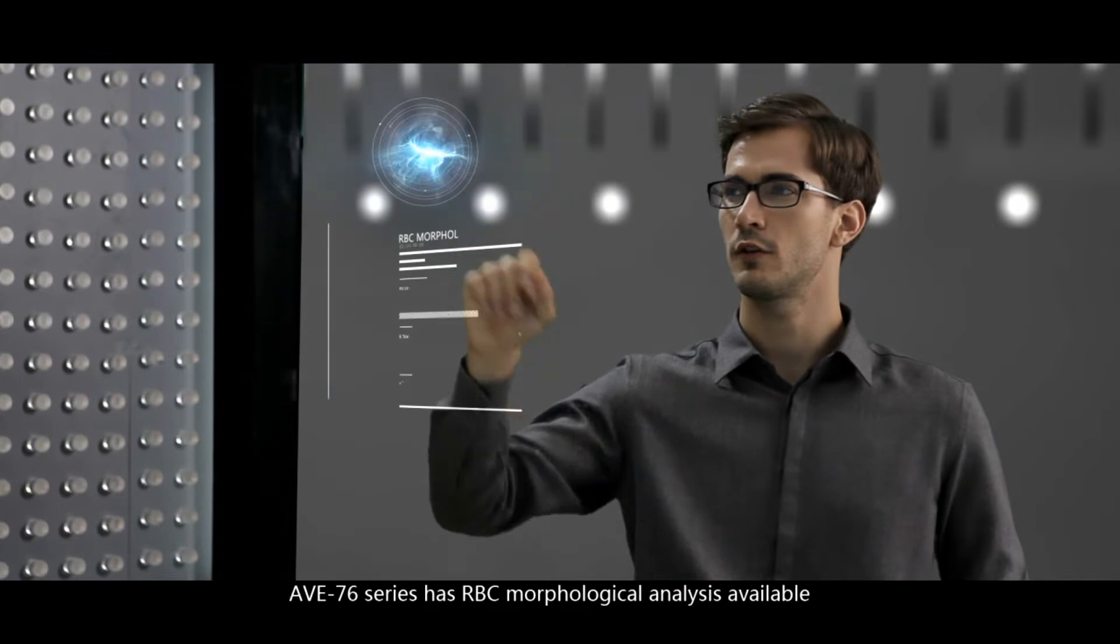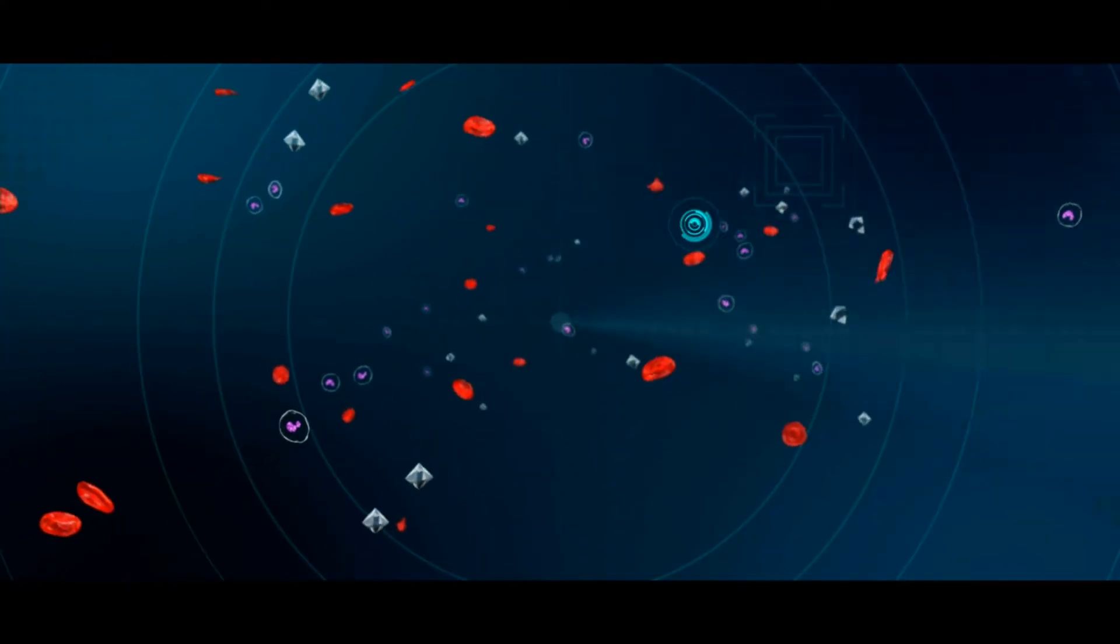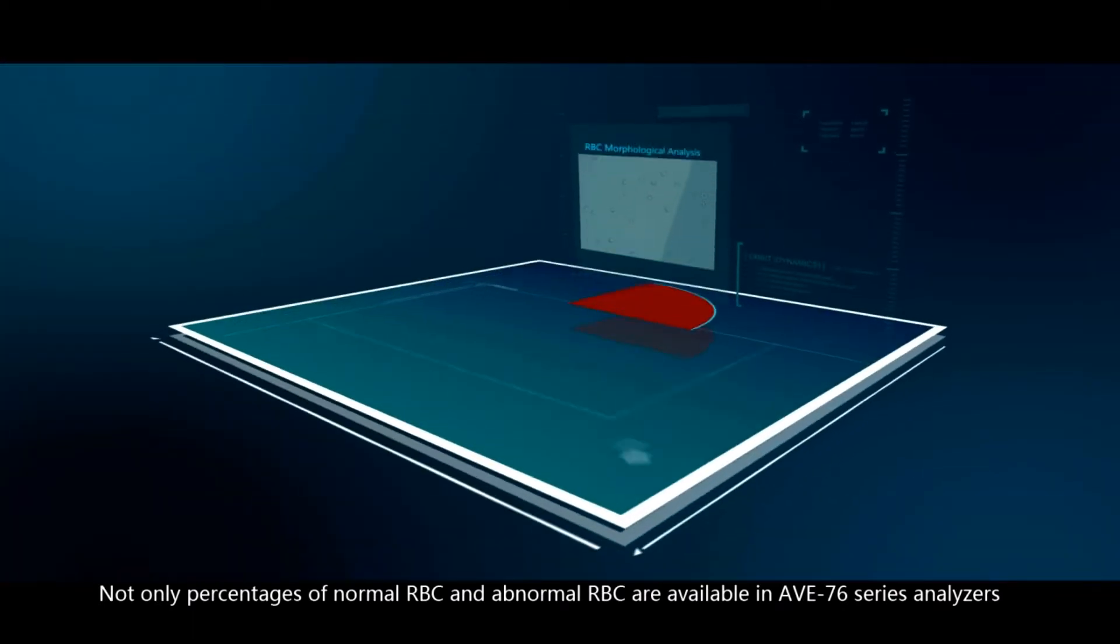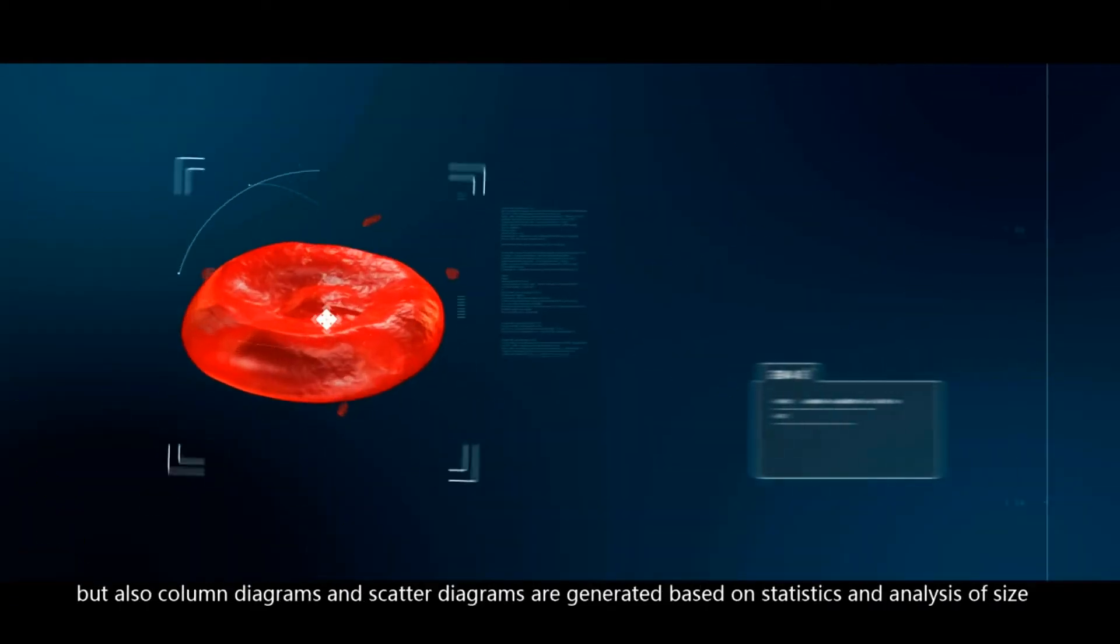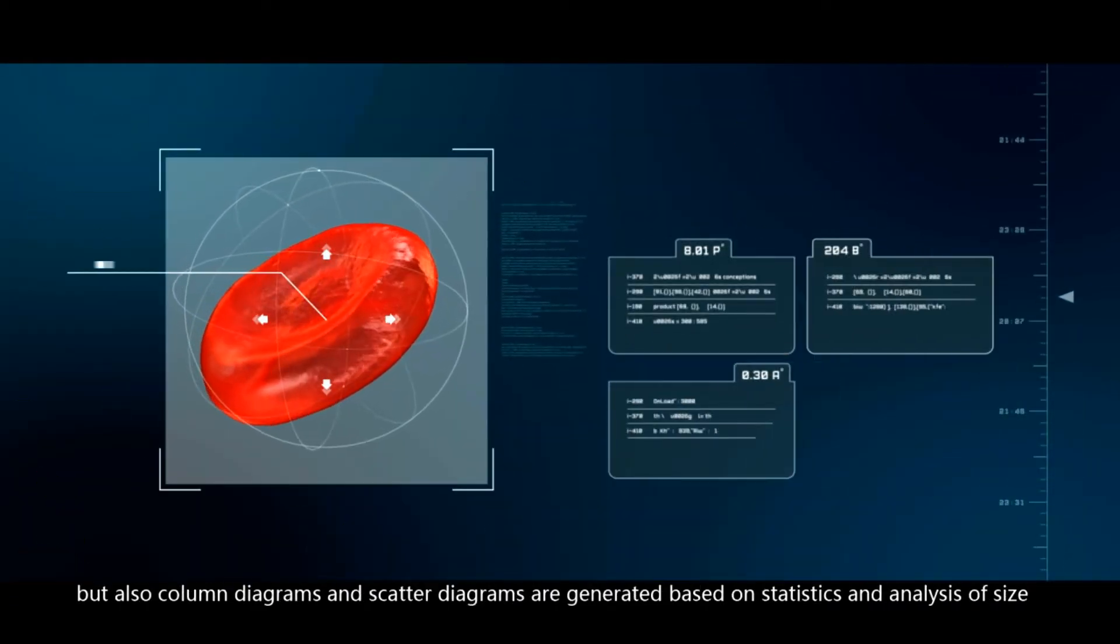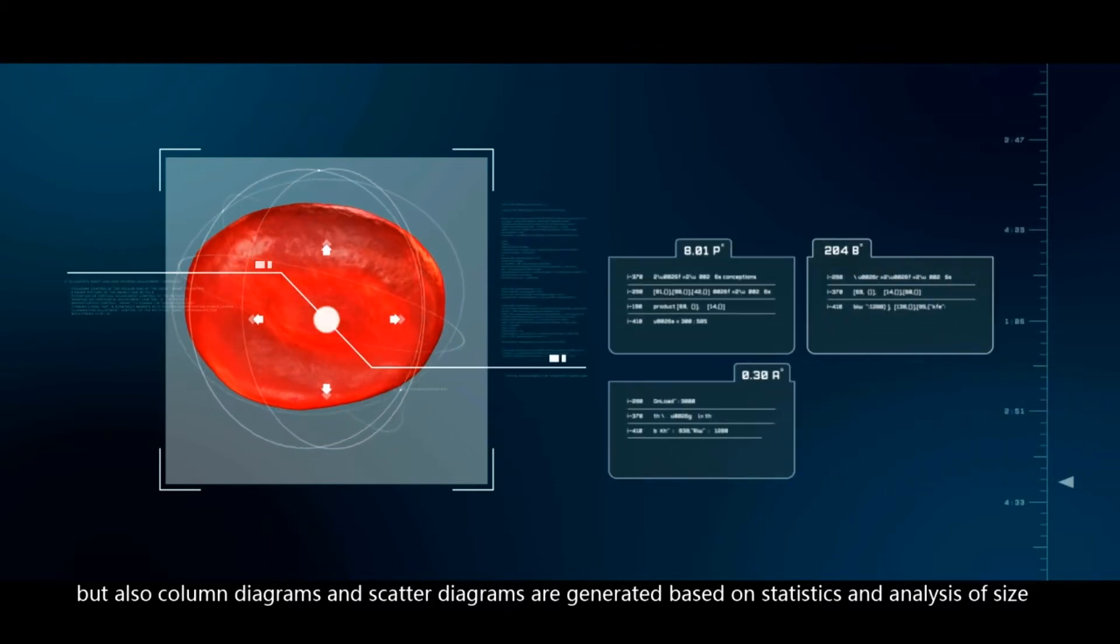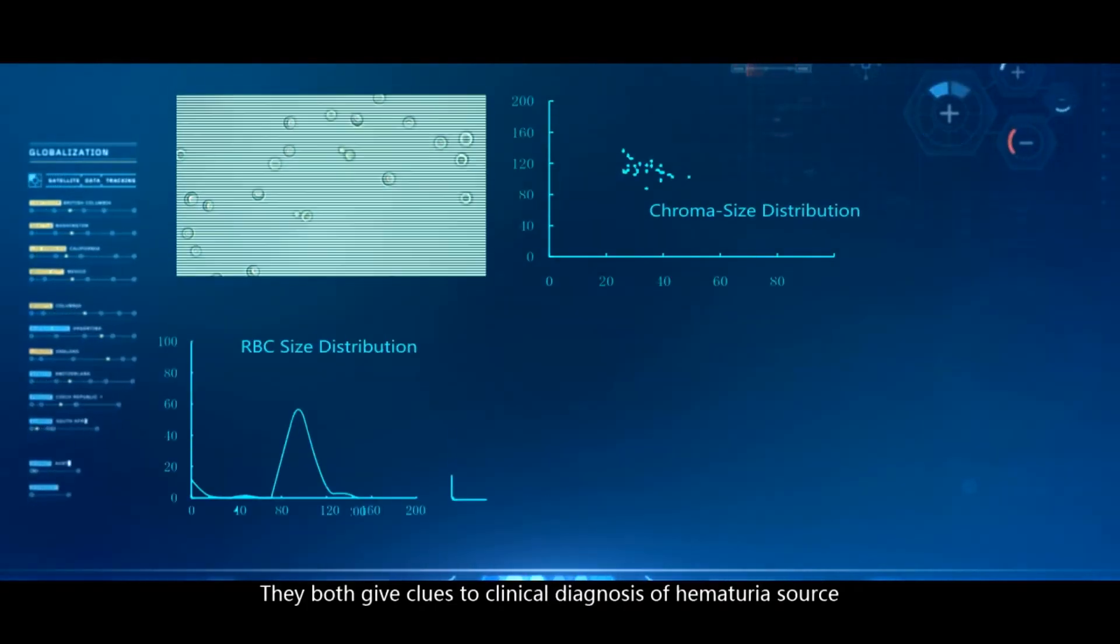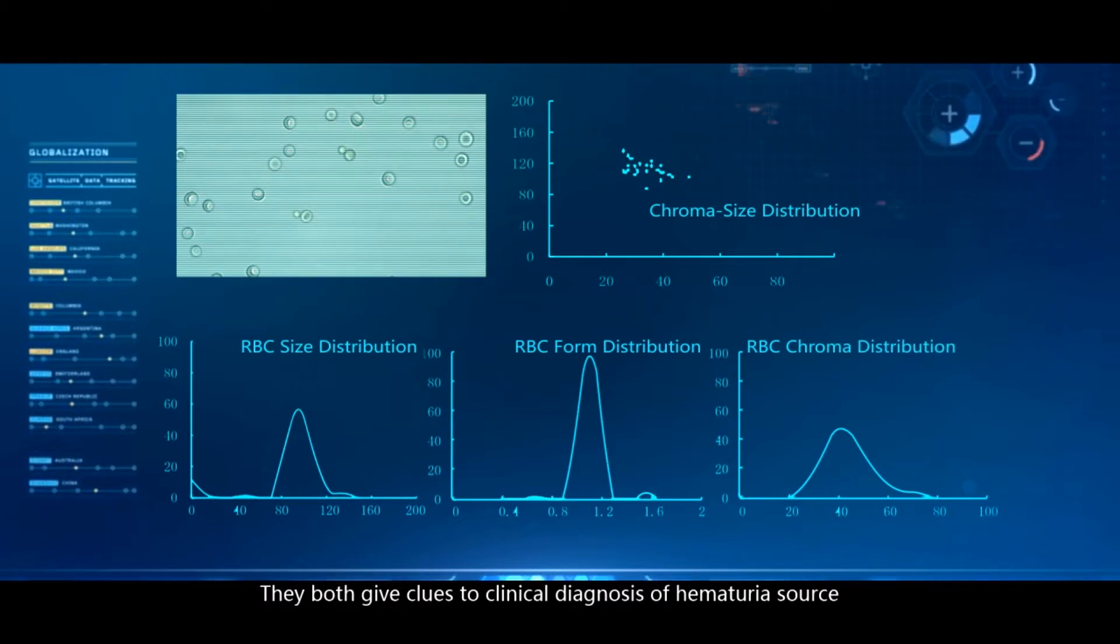AVI-76 series has RBC morphological analysis available. Not only percentages of normal RBC and abnormal RBC are available in AVI-76 series analyzers, but also column diagrams and scatter diagrams are generated based on statistics and analysis of size, form, chroma, and uniformity of RBC. They both give clues to clinical diagnosis of hematuria source.